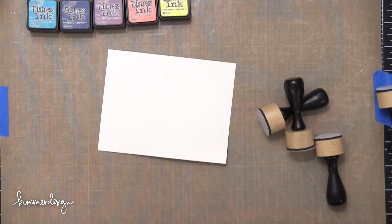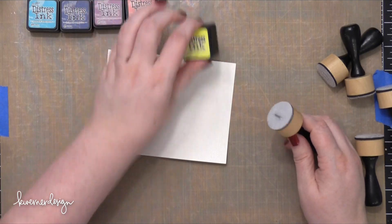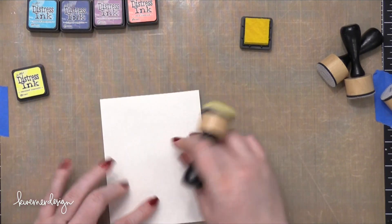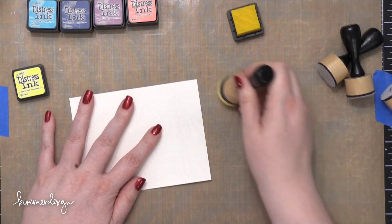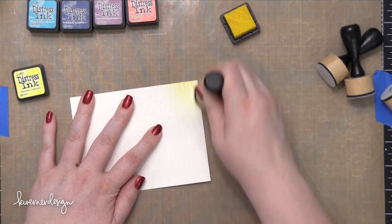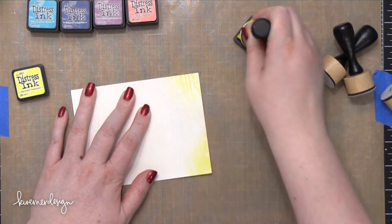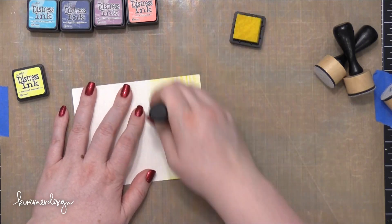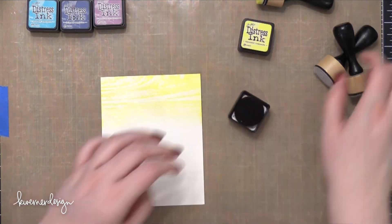So I'm using some distress inks today and that's why I've got my craft sheet out on my work surface. I think that blending onto a project from a craft sheet is a little bit easier because it's a slick surface. I'm going to speed up the video here. I wish I could blend inks this quickly but in real life it's just not possible.